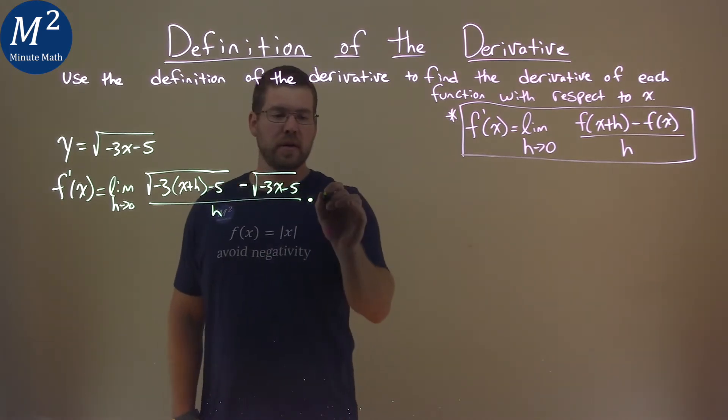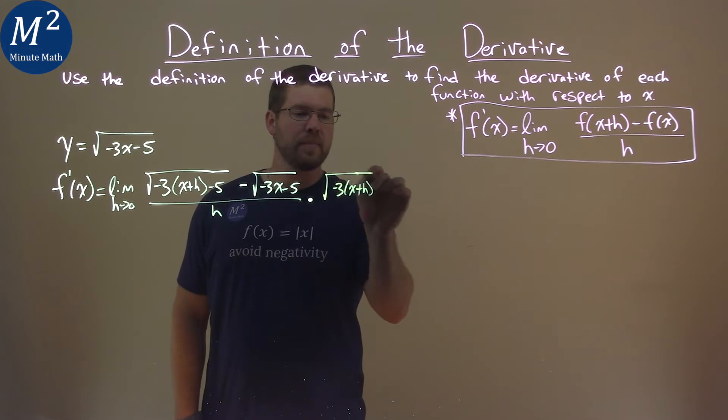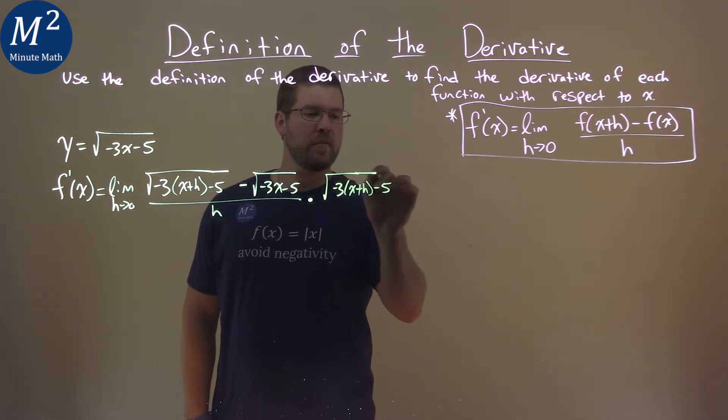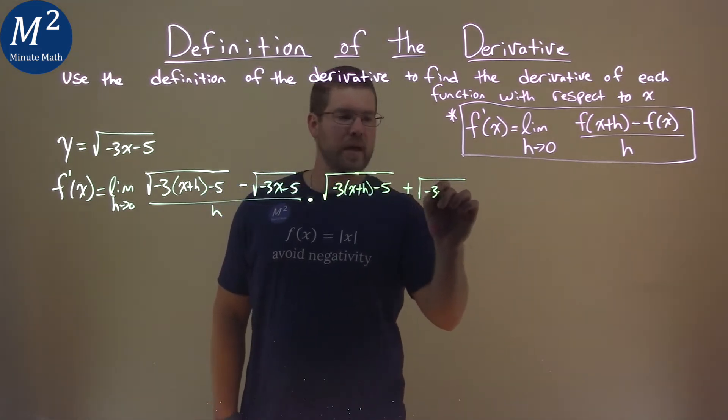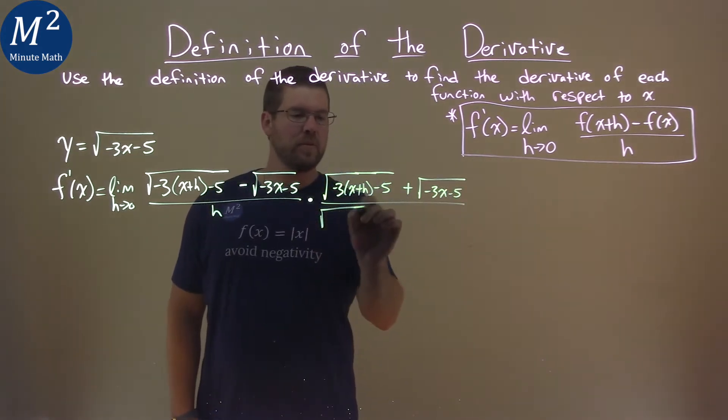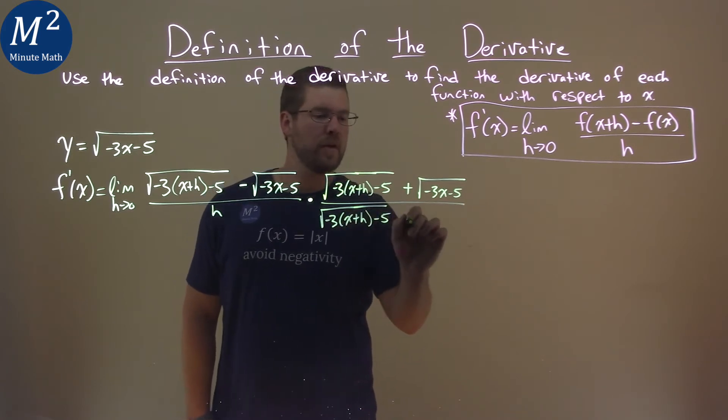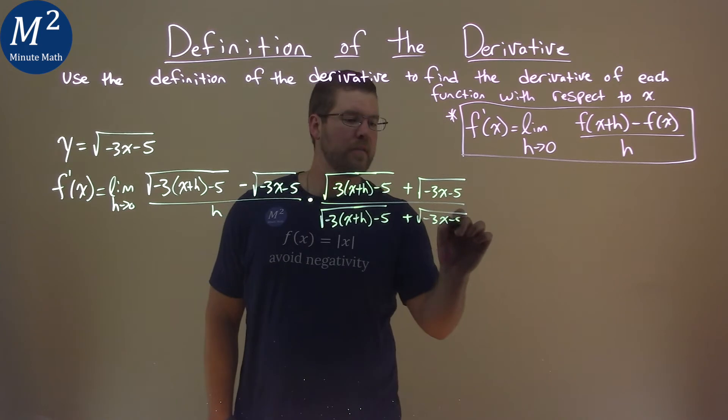So, I'm going to take this numerator, square root of negative 3 times x plus h minus 5, plus the square root of negative 3x minus 5, all over the same thing, square root of negative 3 times x plus h minus 5, plus square root of negative 3x minus 5.